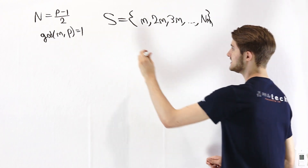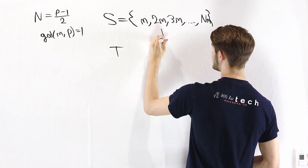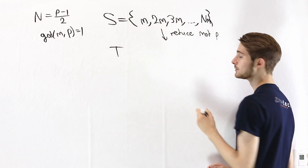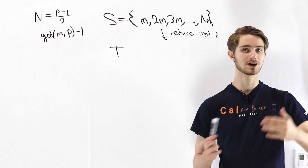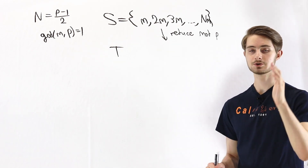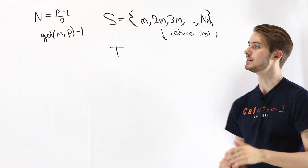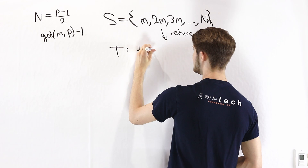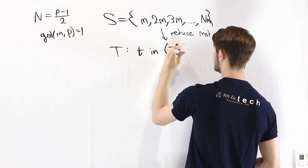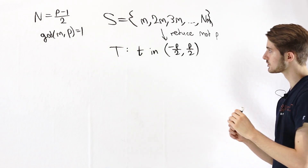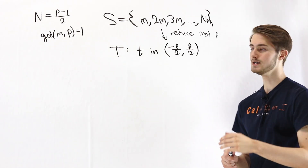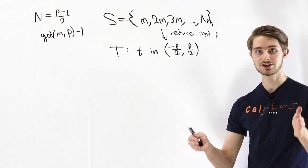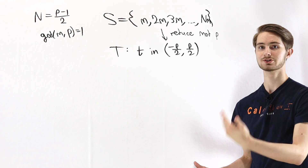Next, we'll construct a second set T. The way that we get T is by taking each element of S and reducing it mod p. But we're going to reduce it in a specific way. Normally when we talk about reducing a number mod p, we say that the number is going to be between 0 and p. But in this case, we're going to say that the elements of T are going to be in the interval negative p over 2 to p over 2. So we're going to reduce the numbers mod p until each element of S ends up somewhere in this range. And since the range has length p, we know that every number is going to end up somewhere in there.